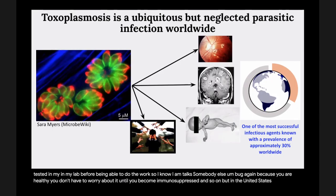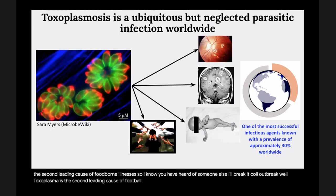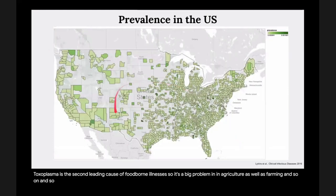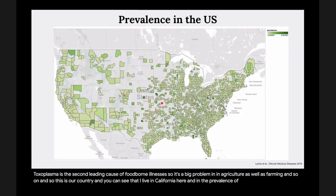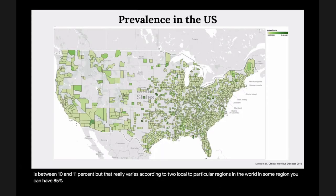In the United States, Toxoplasma is the second leading cause of foodborne illnesses — after Salmonella and E. coli outbreaks. It is a big problem in agriculture and farming. The prevalence according to the CDC in the US is between 10 and 11%, but that really varies by region. In some regions of the world, you can have 85% Toxoplasmosis positivity.